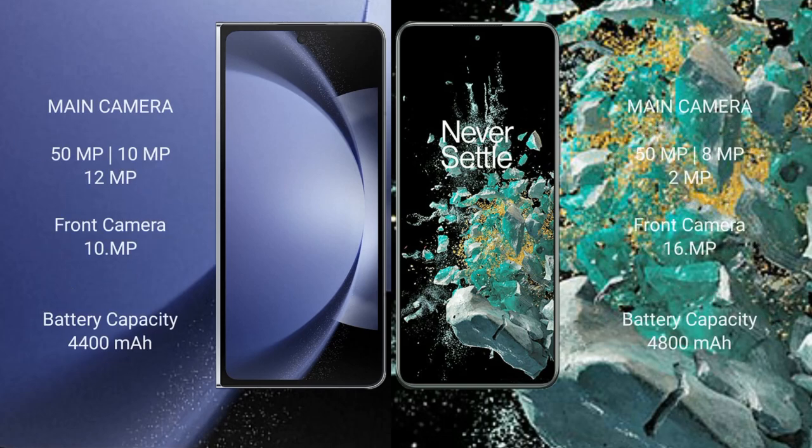Samsung Galaxy Z Fold 6 rear triple camera setup: 15MP plus 10MP plus 12MP, and a front camera of 10MP. OnePlus 10T rear triple camera setup: 50MP plus 8MP plus 2MP, and a front camera of 16MP.